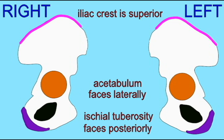So if one orients an os coxa so that the iliac crest is superior, the acetabulum is lateral, and the ischial tuberosity faces posteriorly, one can distinguish between the right and left os coxa.